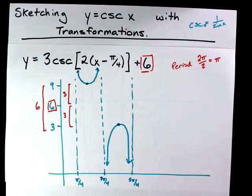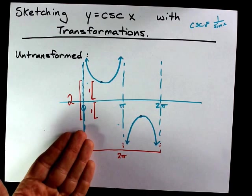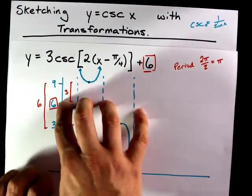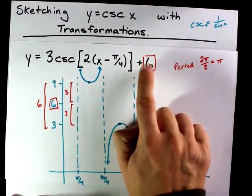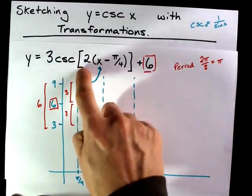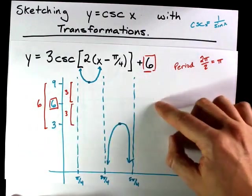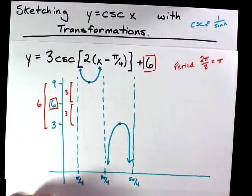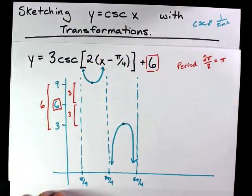Alright, that was actually it. All you really have to do is remember what the original looks like. Be willing to move your midpoint, vertical midpoint, upward or downward according to your vertical shift. Make your maximums and minimums as far away from that vertical middle as your vertical stretch requests.